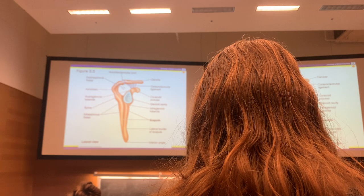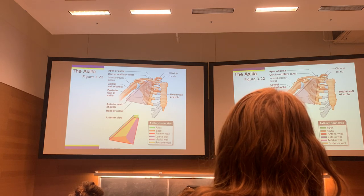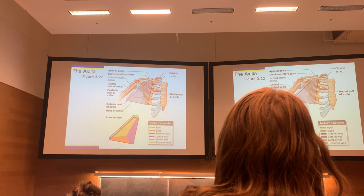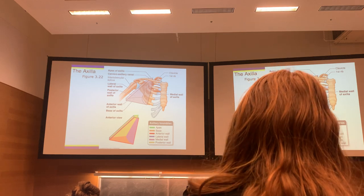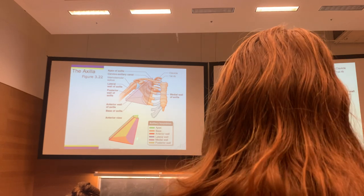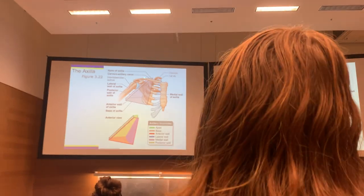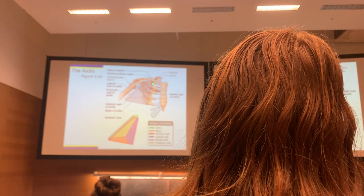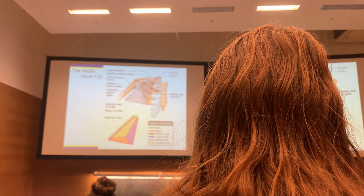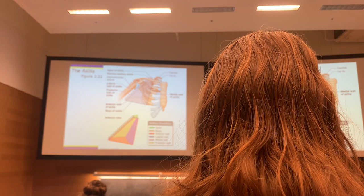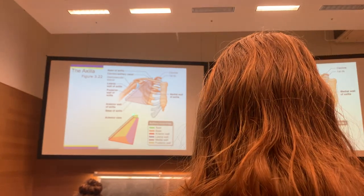We're not going to cover the structures that go through the axilla yet, because we need to cover what they are first. Another area of interest is the axilla - referring to your armpit region. You can break it into a trapezoidal-shaped space. As you cross over the first rib and behind the clavicle, medial to the acromion, there's a very small space. I encourage you to look at the skeletons to see how tiny that space is - that's where all the nerves and blood vessels to the limb have to pass through.